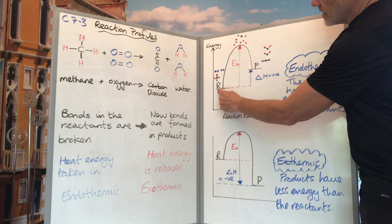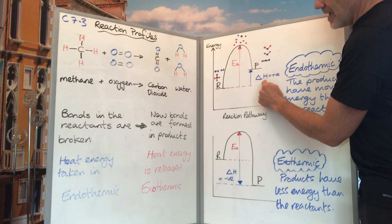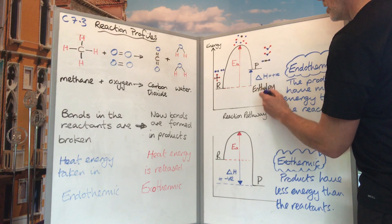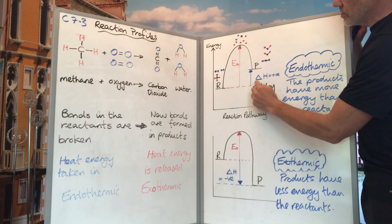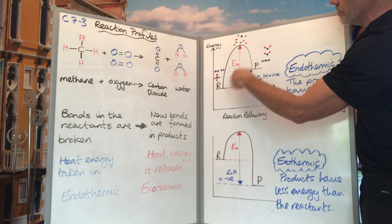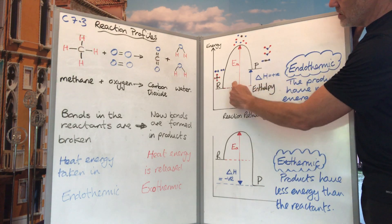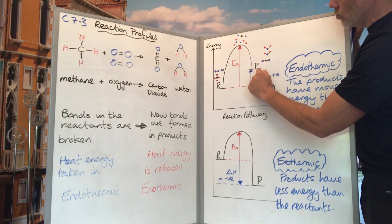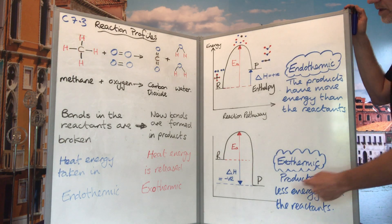The difference between the reactants' energy level and the products' energy level is known as delta H — the enthalpy change of the reaction. Delta is a Greek letter meaning 'change in,' and H is the enthalpy. If delta H is positive, we have an endothermic reaction, because the energy put in to break the bonds is much bigger than the energy released when new bonds form.